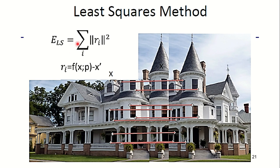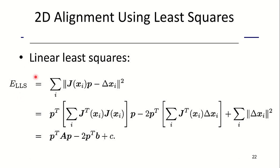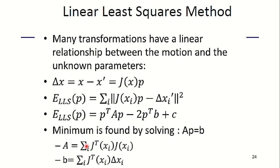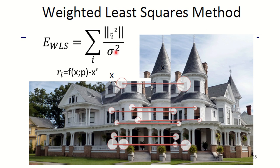In least squares method, E_LS = summation of all the squares of the residuals. In linear least squares, this is the formula for E_LS and this gives the linear relationship between them. You are minimizing them by solving the equation Ap = b, where A and B are given. Summary of linear least squares method. In weighted least squares method, many transformations have a linear relationship between the motion and unknown parameters. Minimize by solving this equation Ap = b where A and B are given below. In weighted least squares method, you take the summation for all the points i where you divide the residual squares by the variance squared.